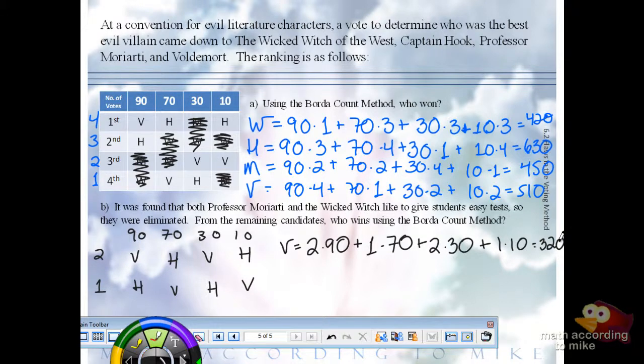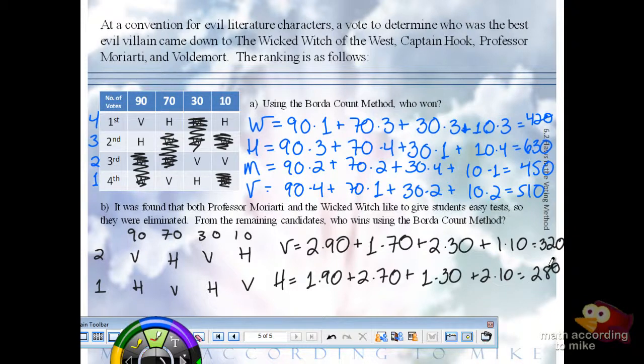According to this rule, Hook should have a score higher than 320, because he should still win, because we took out two candidates that didn't matter. So for Hook, it'll be 1 times 90, plus 2 times 70, plus 1 times 30, plus 2 times 10. 280. Well, who did not see that coming? Hopefully no one, because this problem is all rigged. So notice the Borda count method did not satisfy the irrelevant alternatives criterion, because now Voldemort wins the election.